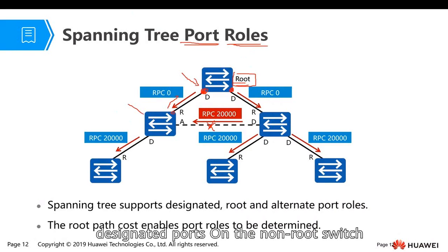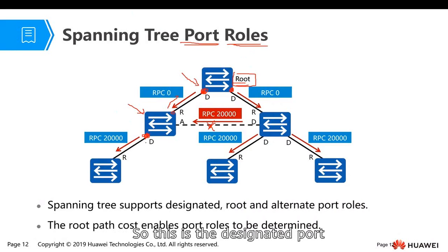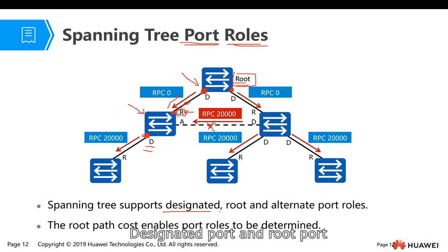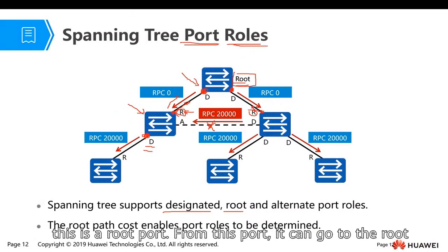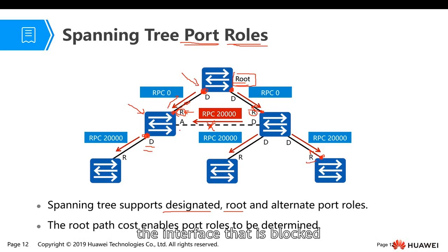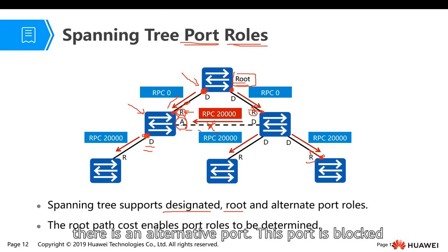On the non-root switch also, these ports are leaving, going far away from the root, so they are designated ports. The port that has the best path to the root will be the root port. For example, on this switch, this is the root port — from this root, this port can go to the root. From this port, the frame should go to the root.